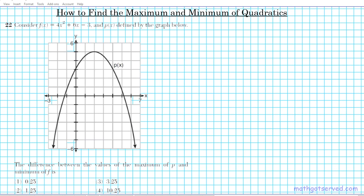In question 22, we're going to be looking at finding the extreme of the function and the graph. Question 22 reads: consider the function f of x equals 4x squared plus 6x minus 3 and p of x defined by the graph below. We know this is a quadratic because the graph is a parabola, and all parabolas are quadratic functions.